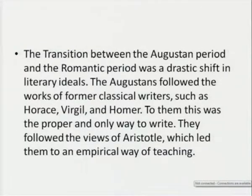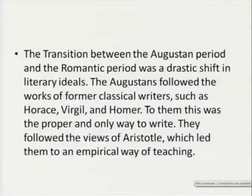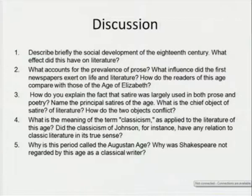The transition between the Augustan period and the Romantic period was a drastic shift in literary ideals. We will see in the next lecture how the Augustans followed the works of former classical writers. To them, this was the proper and only way to write; they followed the views of Aristotle. Therefore we have to see how we look into this age and how it became the precursor of the next age.